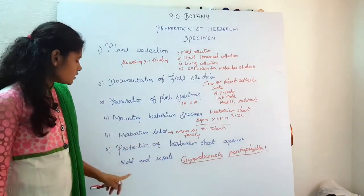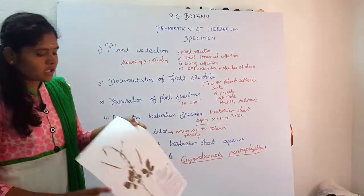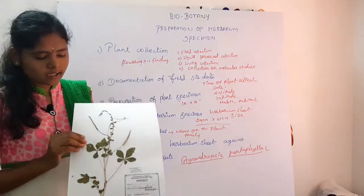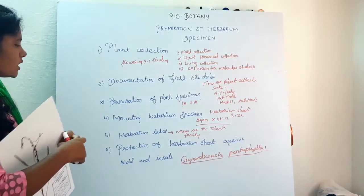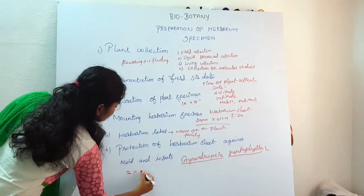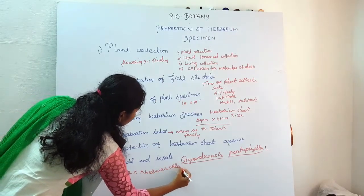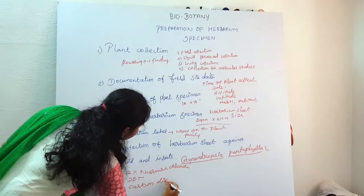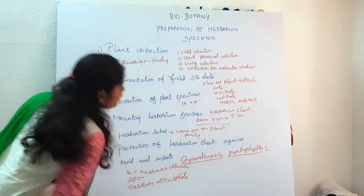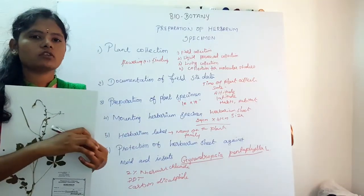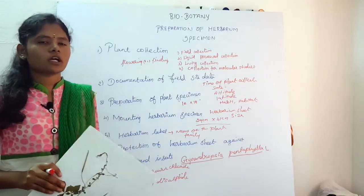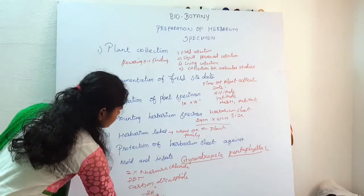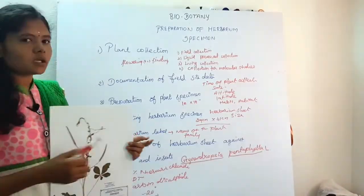Sixth and last step: production of herbarium seed against molds and insects. After the herbarium is prepared, the plant must be protected from fungus, insects, and pests using chemicals. A fungicide used is 2% mercuric chloride. DDT with carbon disulfide is also used. A fumigating agent — formaldehyde — is used. The modern method is minus 20 degree Celsius freezing, which is now the preferred preservation method.